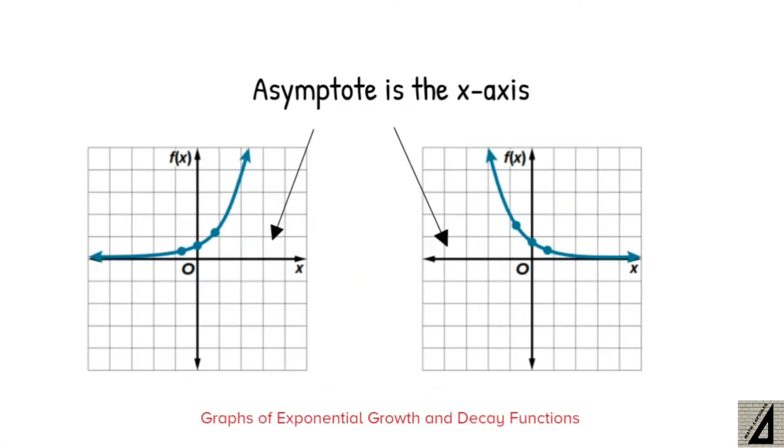Here are two graphs, one for the exponential growth and the other is for exponential decay. As you see here, the asymptotes here in these graphs are the x-axis.